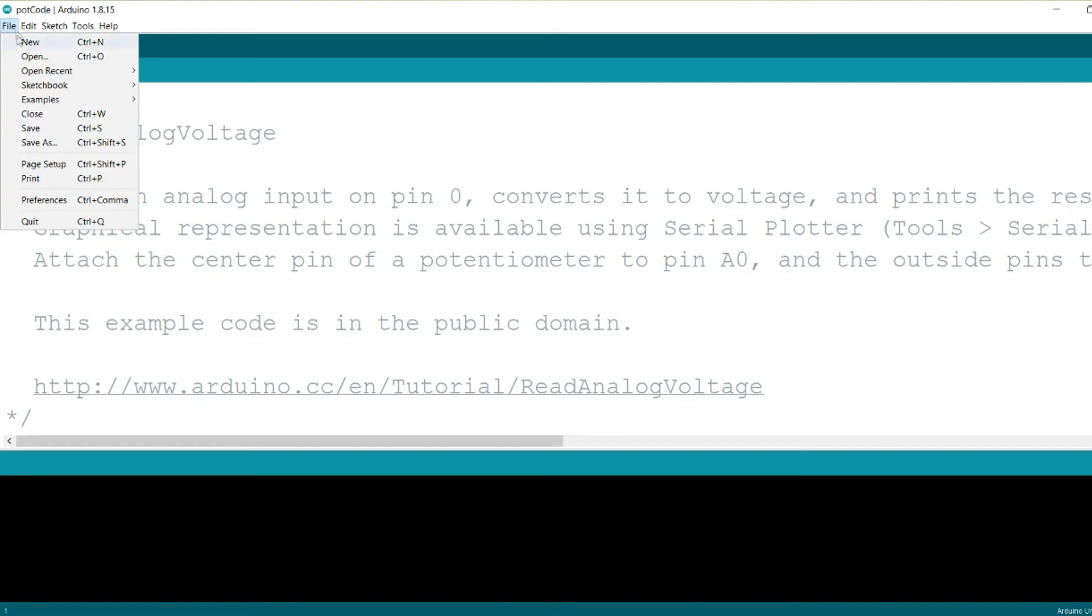We are using one of the example codes, read analog voltage. It can be found from the Arduino IDE under file, examples,